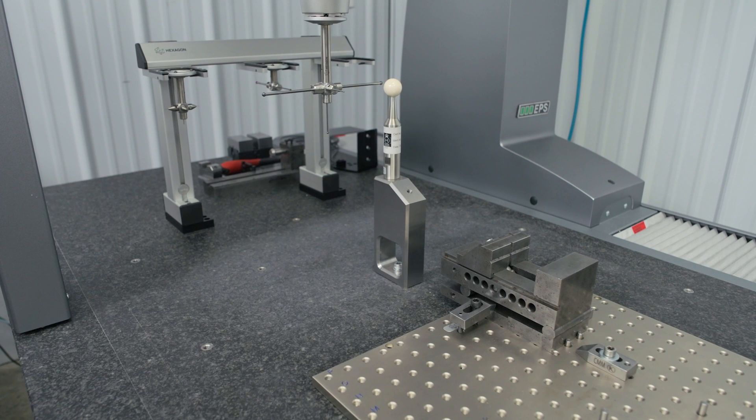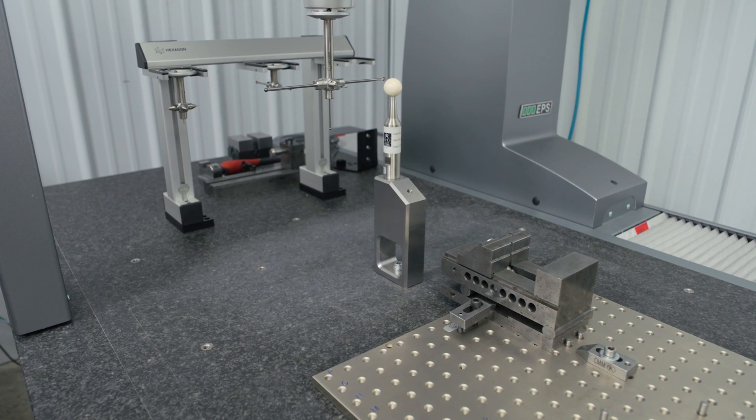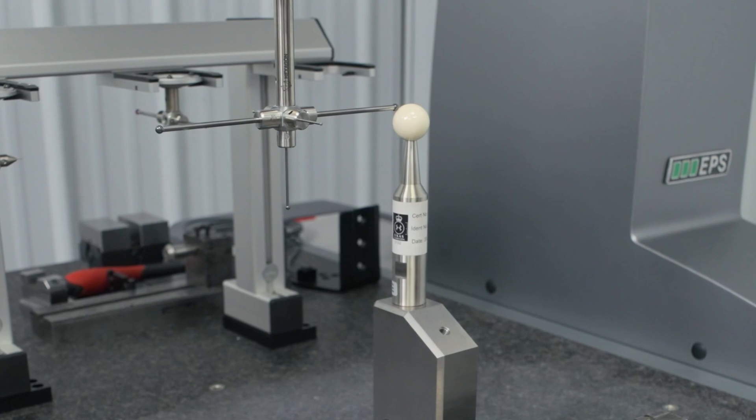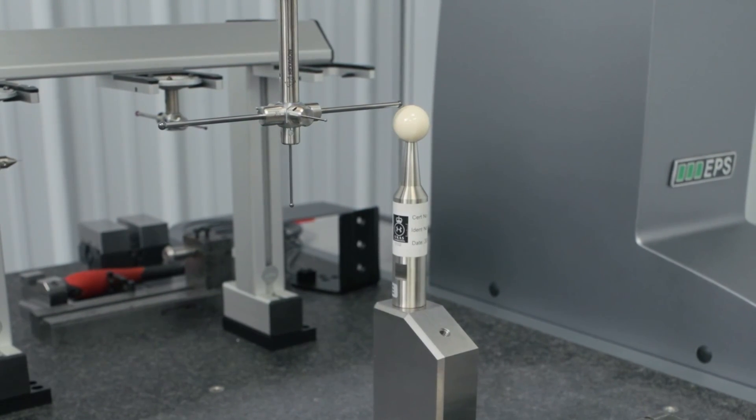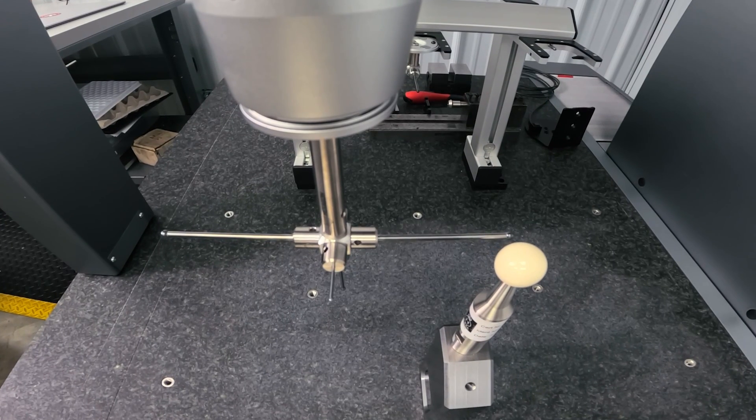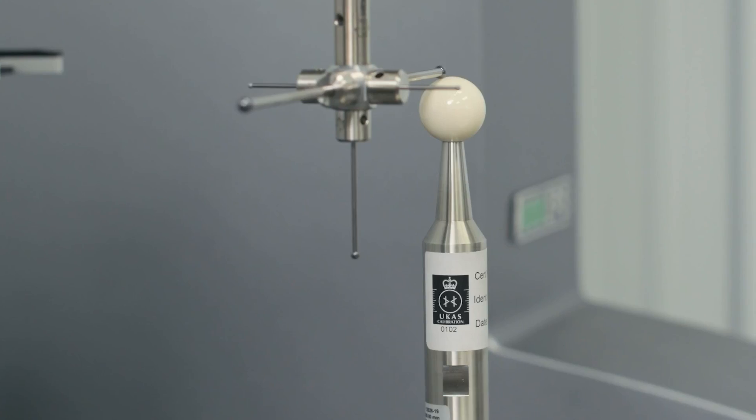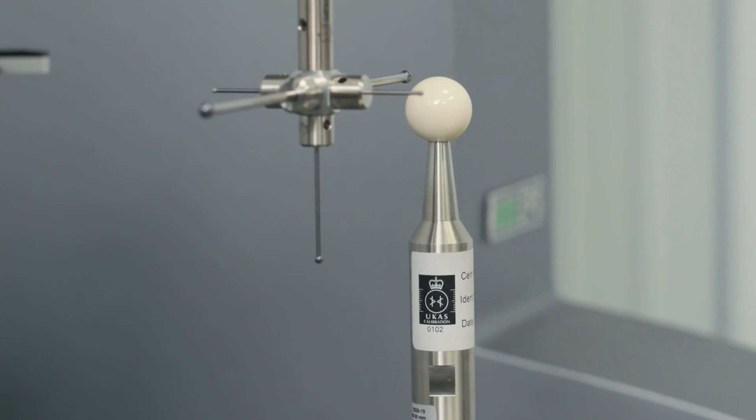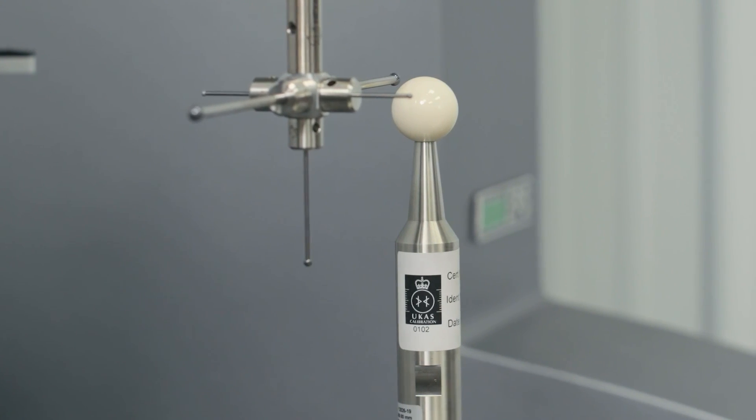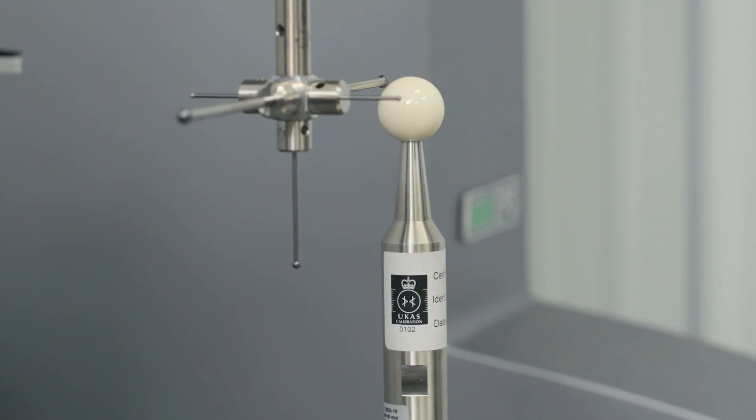So as this goes through, it's going to go to every single probe that we have on the star bit, and it will calibrate each of those probes compared to the master. We will get a reading at the end that we'll look at, which will show our standard deviation of those measurements to see how close they are to the actual measurement of the sphere that they're touching off and measuring at this point.